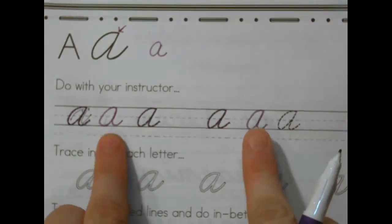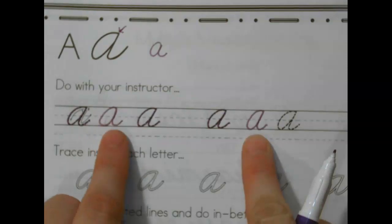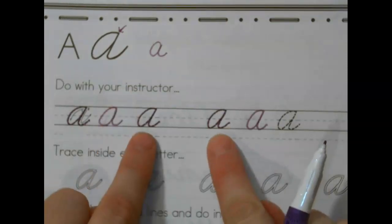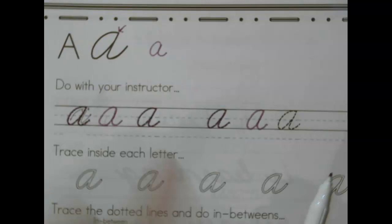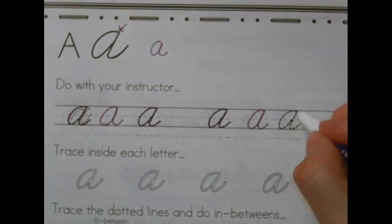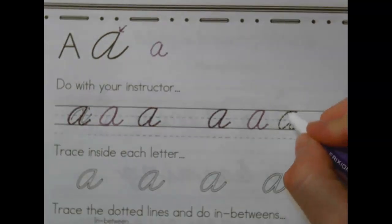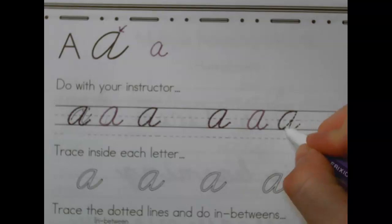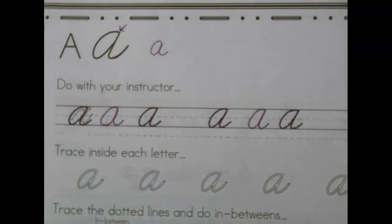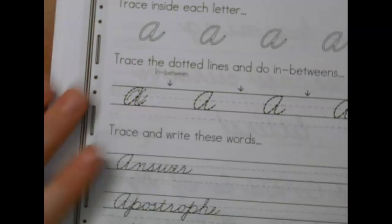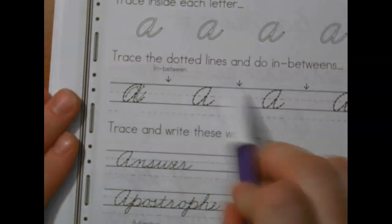All right, one more. Start at the top, curve to the bottom, teardrop, ninja, connect. All right, so you'll trace and then trace and do in-betweens all by yourself. Notice there's an arrow to kind of remind you where the in-betweens go.